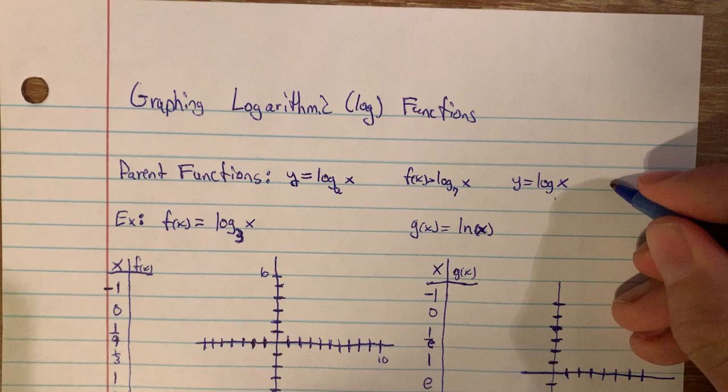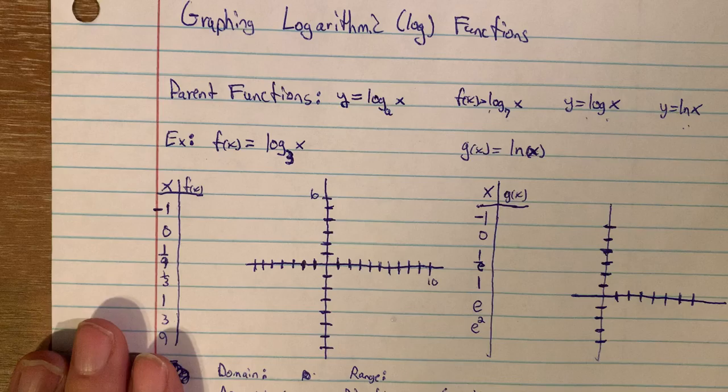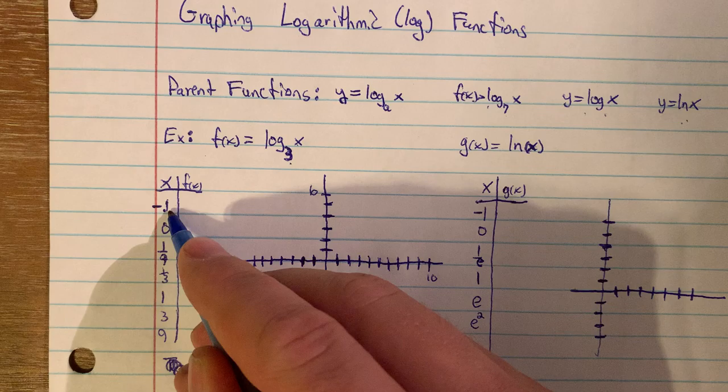The parent functions of logarithmic functions are just anything that is y equals log base something of x. For instance, f of x equals log base 7 of x, y equals log of x — and hopefully we know what the base is there — and y equals natural log of x. These are all good examples because they all just have a base of something.